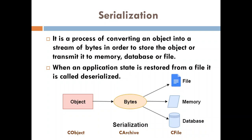After archiving the object, whatever has been archived has to be converted into a file using a CFile class. This whole process is called serialization. I will open the file — it will be in binary — then convert it back into object form and I will be able to see my application. The process of reversing from file to object is called deserialization. From object to file is serialization; from file to object is deserialization.